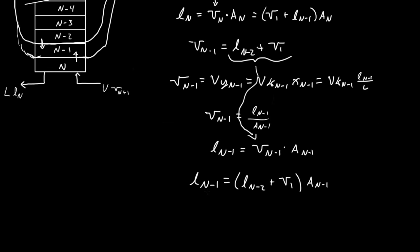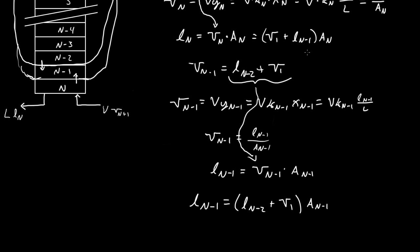And then we know what L_{n-1} is. Up here we didn't know what L_{n-1} was, so now we'll take this and plug it in up here. Then L_n equals (V_1 plus (L_{n-2} plus V_1) times A_{n-1}) times A_n. So we get that.